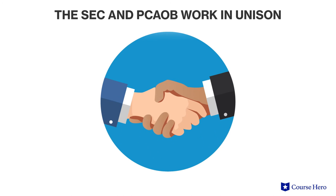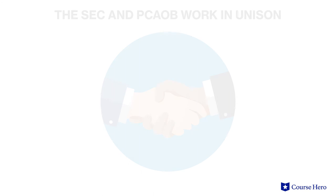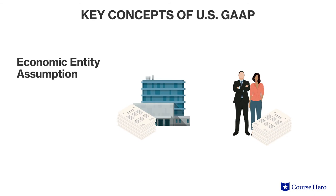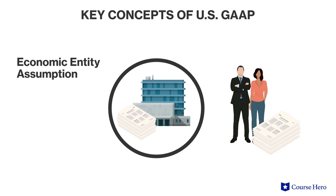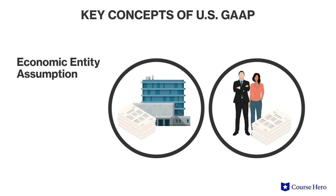These organizations work in unison to ensure the financial information is faithfully represented. The notion of faithful representation rests on seven key concepts of U.S. GAAP. Concept number one is the business entity concept, also known as the economic entity assumption. This concept defines a sort of accounting border around the business to ensure the financial information for transactions made by the business is reported separately from transactions of the owners of the business or any other affiliated business entity.